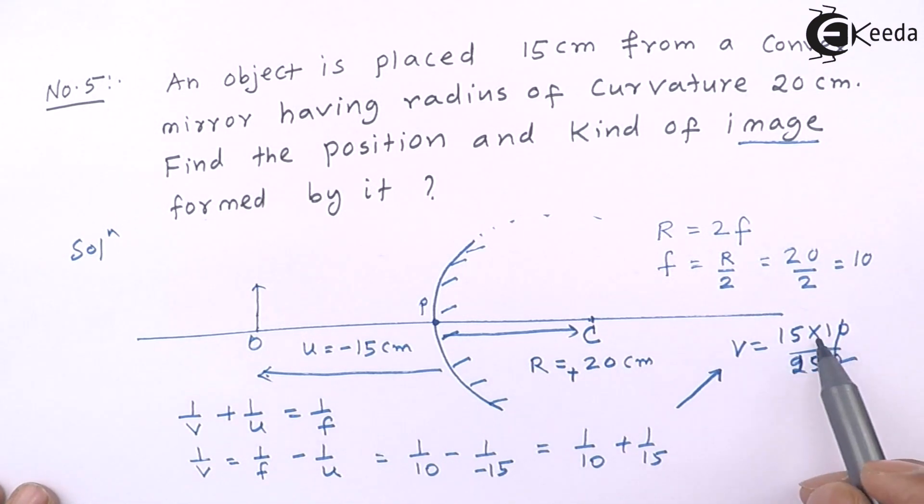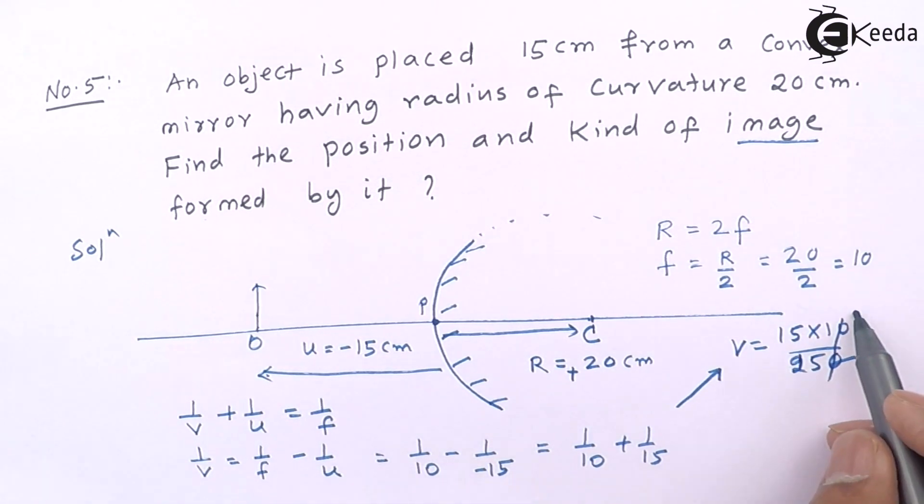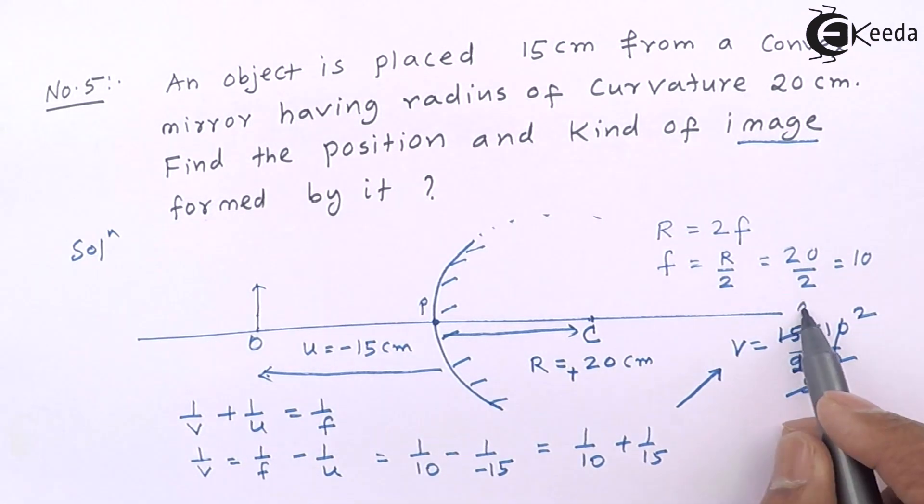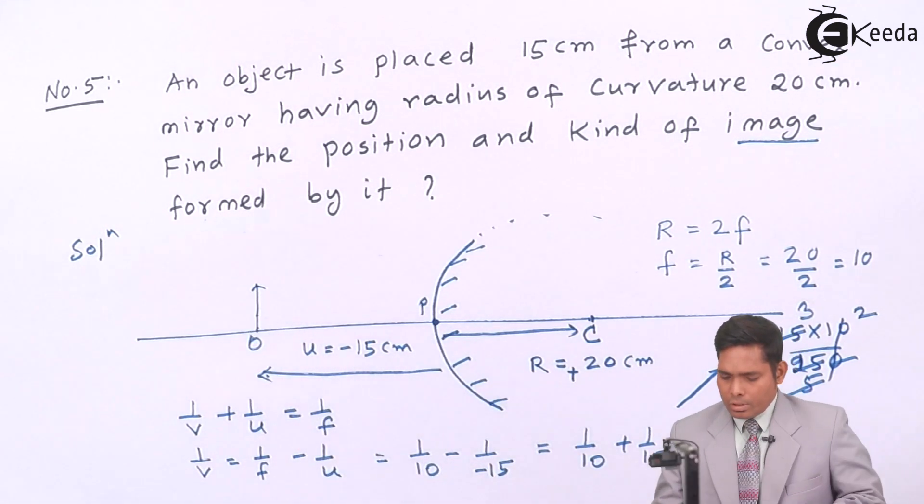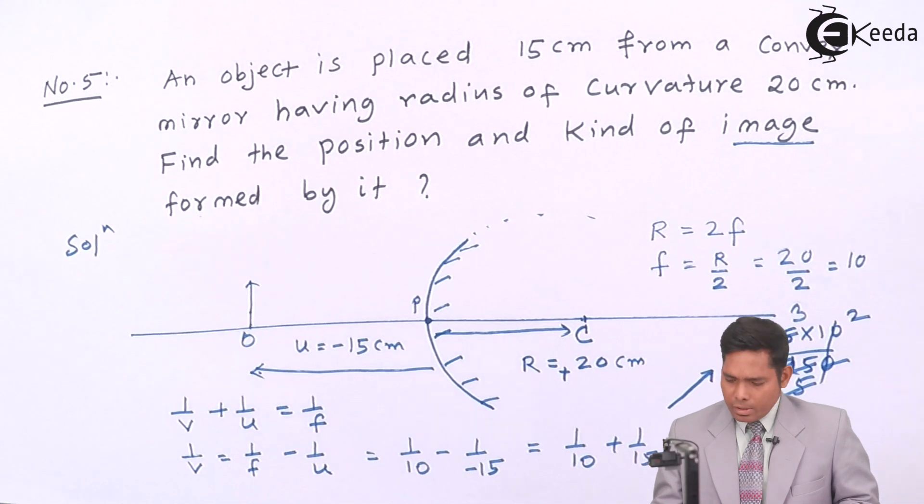v comes out to be 25 by 10, which is 150. If I cancel, this will be 2, then this is 5, then this is 3, so this is 6. So v comes out to be 6 centimeters.